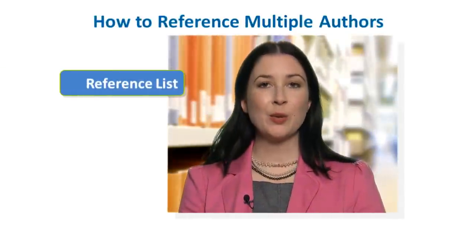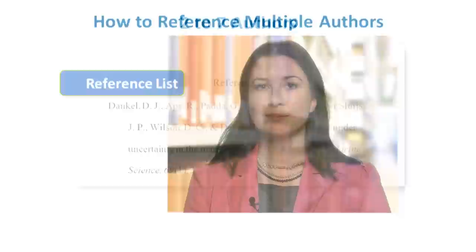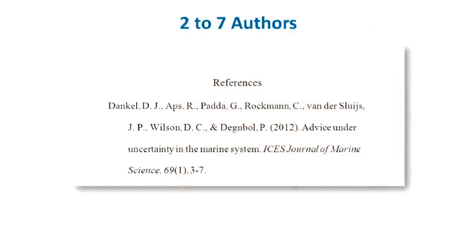How do you cite a source with multiple authors in your reference list at the end of your paper? For sources with up to and including seven authors, always include the last names and initials of all authors in your reference list. Each author's last name is entered first, followed by their initials. Authors' names are separated by commas, and the symbol for AND should be used.